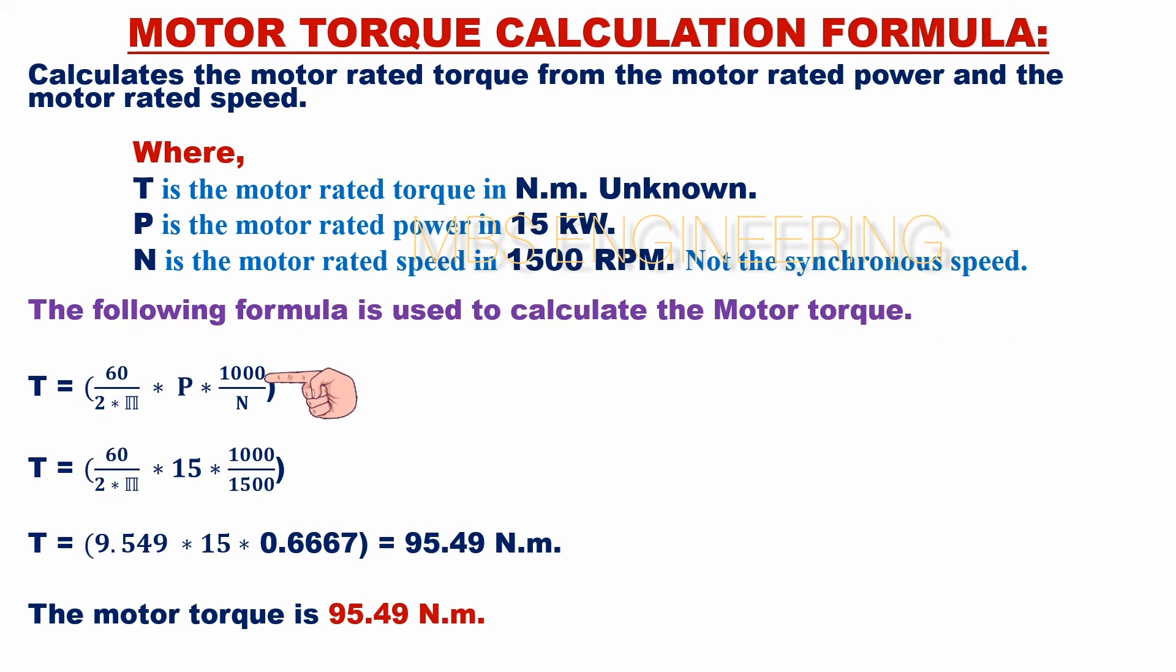Motor torque T equals 60 times P times 1000, and the obtained value is divided by 2 pi N.